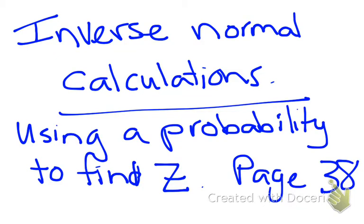What we're looking at now is our inverse normal calculations. In particular, to start with, using a probability to find Z on page 38.